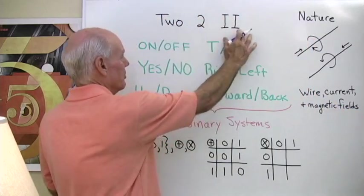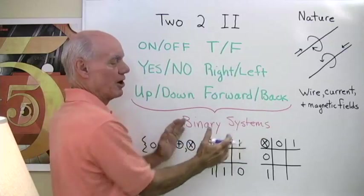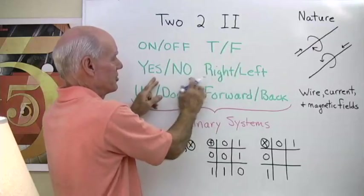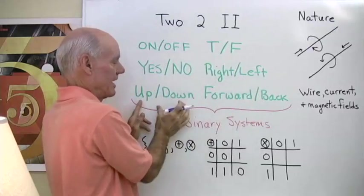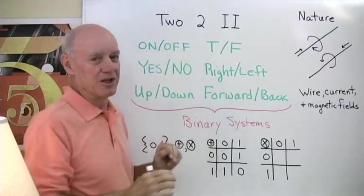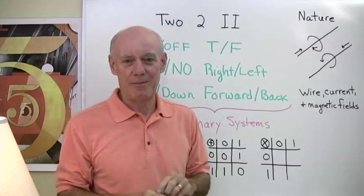When I think of the number two, I think of systems like this that we call binary systems. On, off, true, false, yes, no, right, left, forward, back, up, down, things like that where there's only two possibilities and those two possibilities cannot happen at the same time.